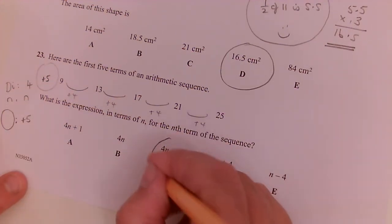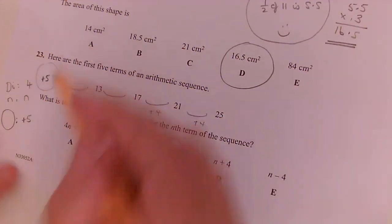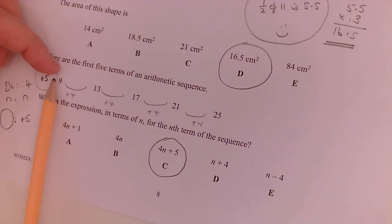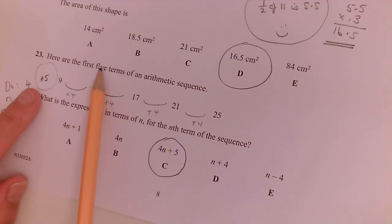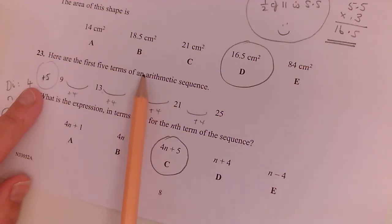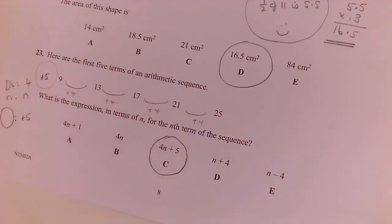And I can check it. Checking the first term, 4 lots of 1 is 4 plus 5 is 9. 4 lots of 2 is 8 plus 5 is 13. 4 lots of 3 is 12 plus 5 is 17, and so on and so forth.